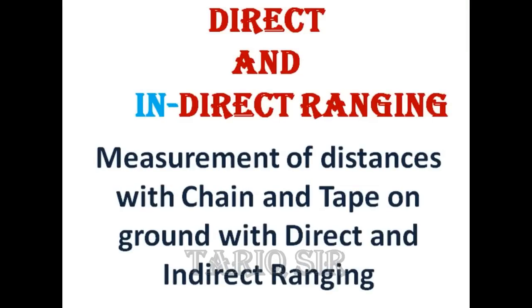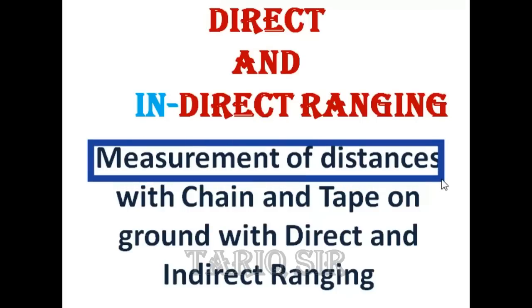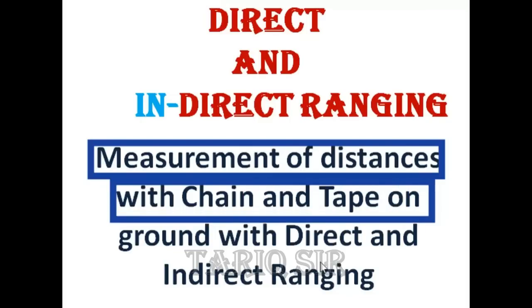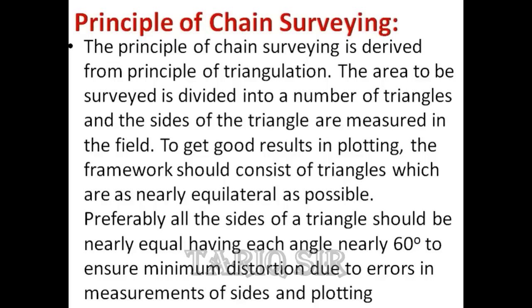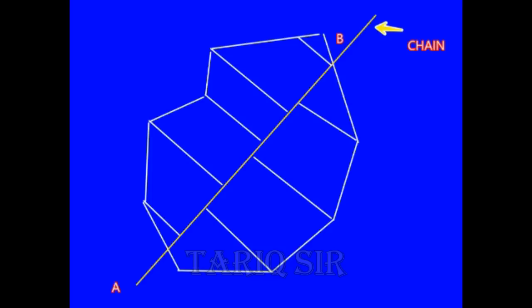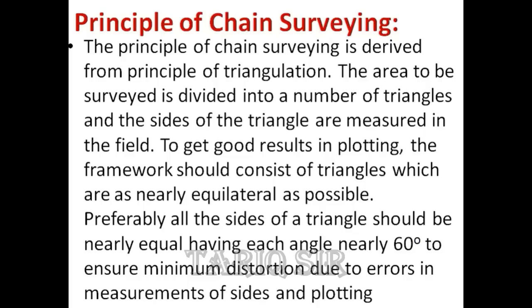The purpose of the direct method is to measure distances with the help of a chain tape on the ground, using either direct ranging or indirect ranging. Chain surveying is derived from the principle of triangulation, and the area is divided into triangles, rectangles, and polygons. The areas of these shapes are taken and added up to find the total area of the plot.